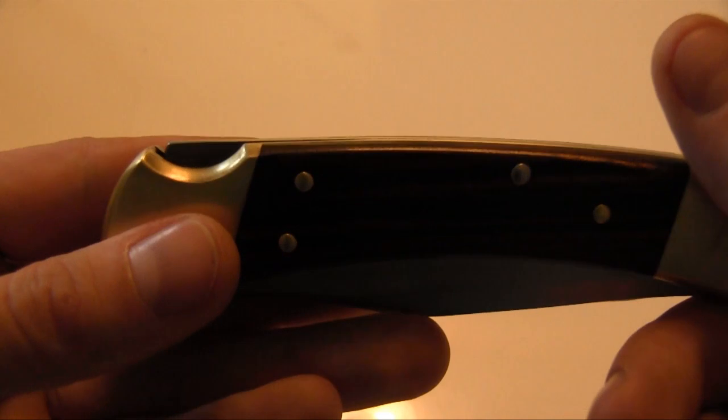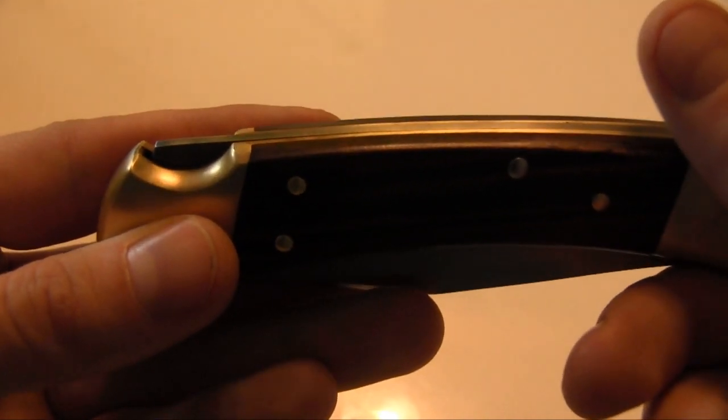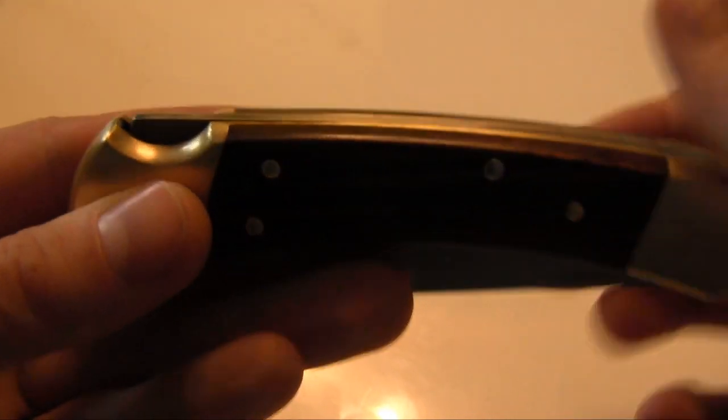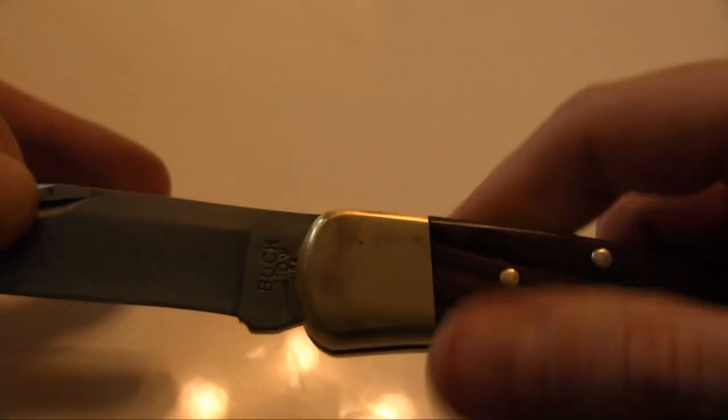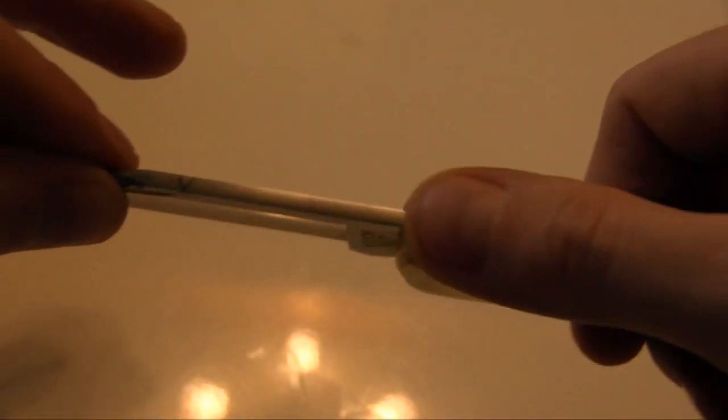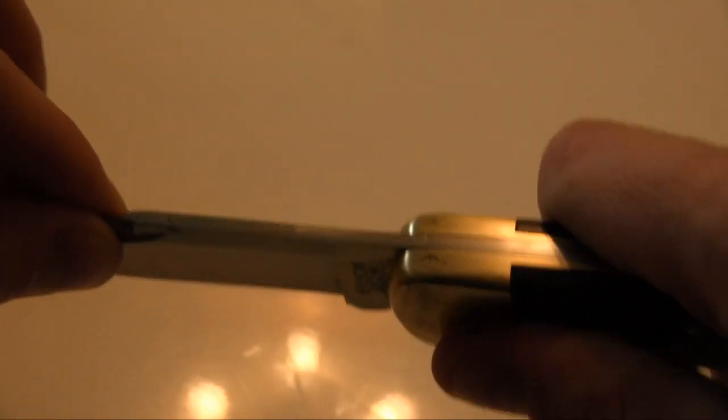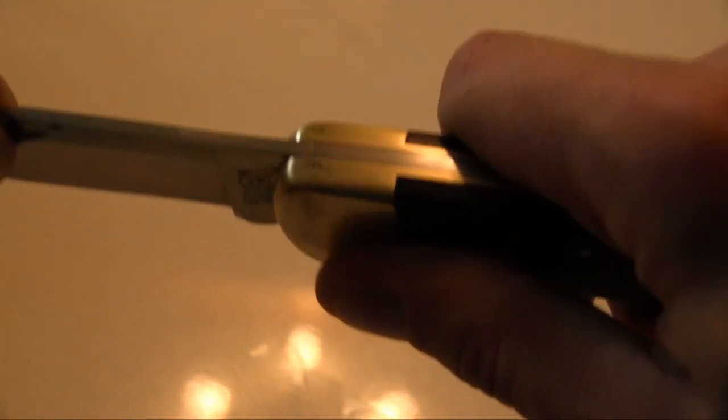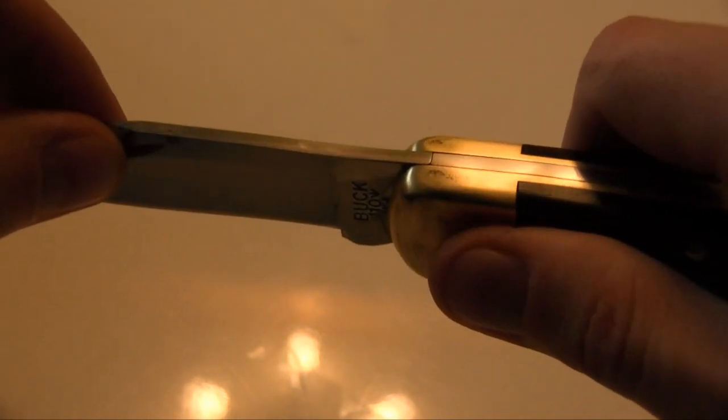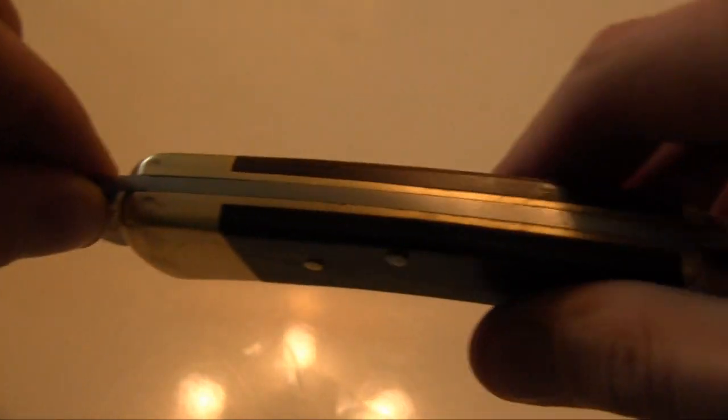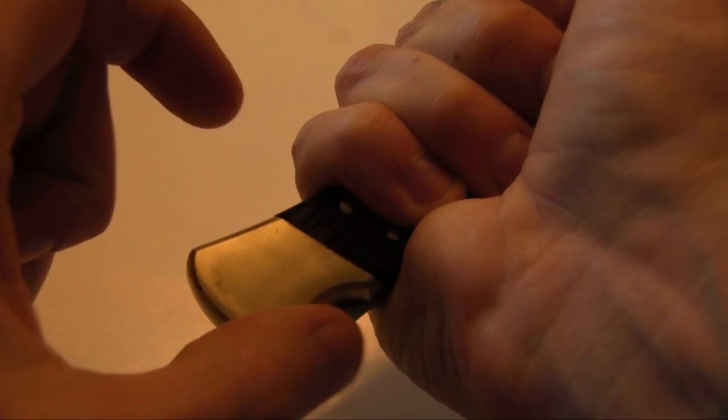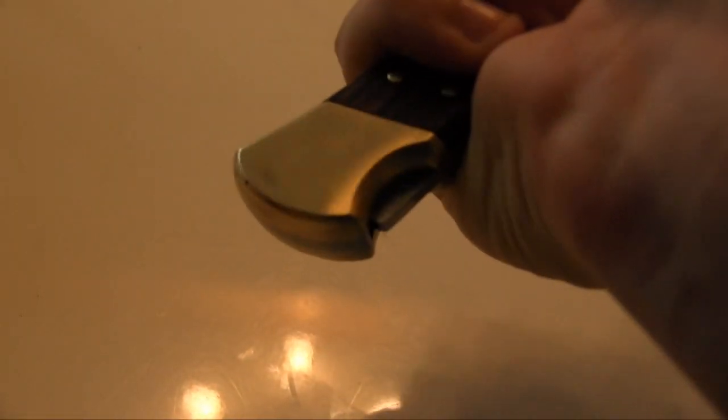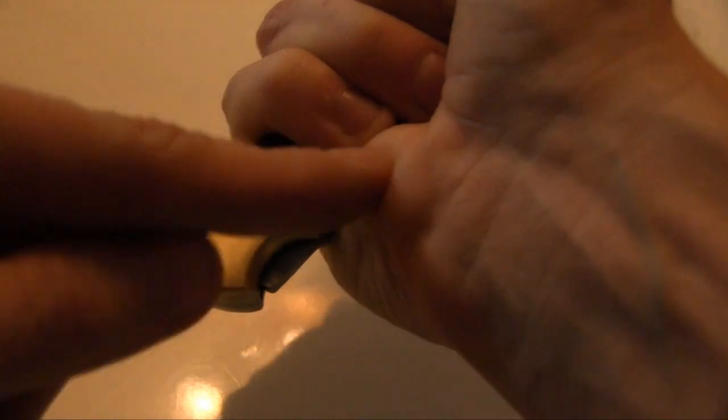The locking mechanism is a lock back that secures the blade when open. There is no side to side or up and down blade play. And with this longer handle you don't touch the locking or release bar of this lock with your palm.